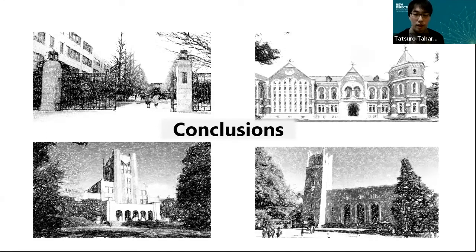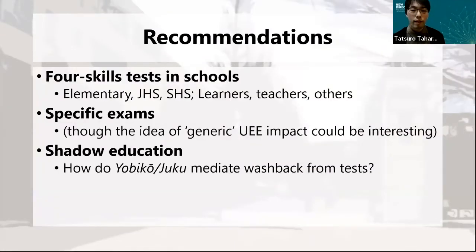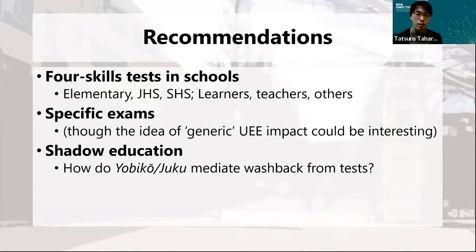Based on our review, several conclusions can be drawn and recommendations are made for future washback research in Japan. First, research is required into the use of four-skills tests and the washback generated in different micro-contexts, particularly at the senior high school level. That is because the intended outcome of the university entrance exam reform in Japan and the use of the four-skills tests in this context is to generate positive washback effects in education in Japan.